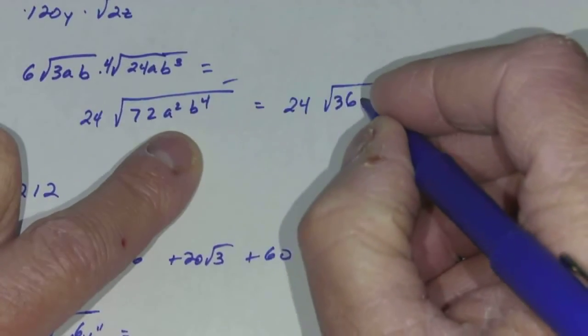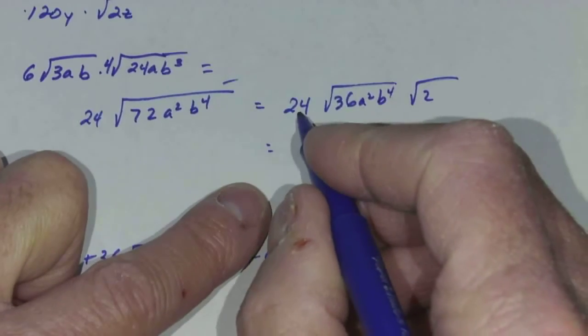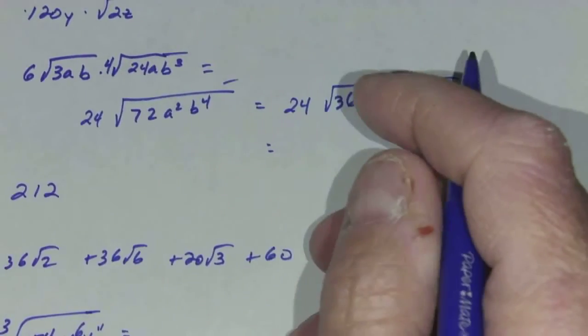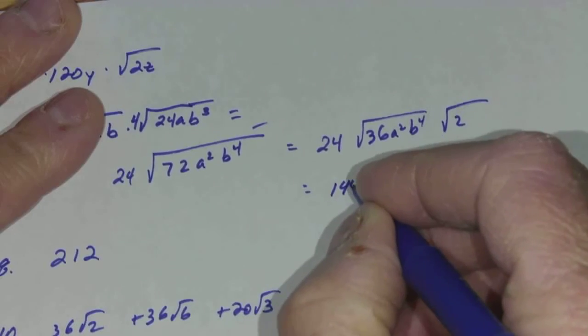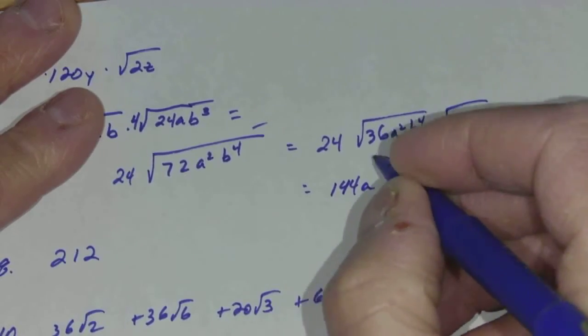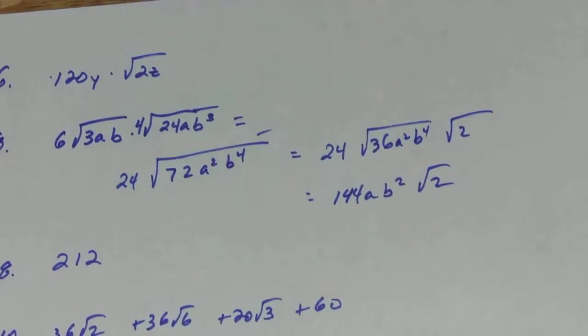A squared and b to the 4th both go over here. So what do I have left? 24 times 6. What the heck is that? I think it's 144. 24 times 6. Yeah, 144. Square root of a squared is a. Square root of b to the 4th is b squared. Square root of 2.